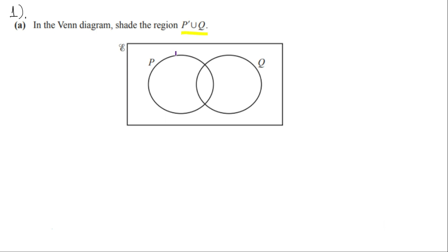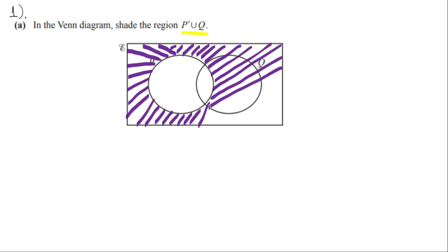So shading P complement first. P complement is everything outside P. The region not including the circle. And then you have union with Q. So Q is this complete circle. You already have major part of Q shaded. So to complete the whole circle, you have to shade this part too.